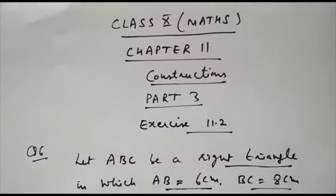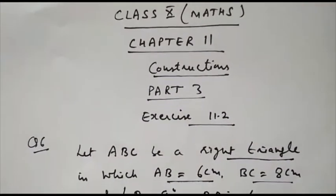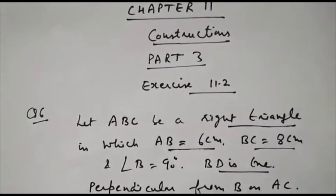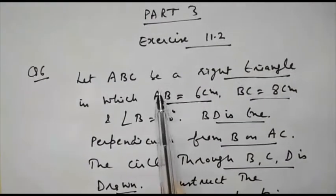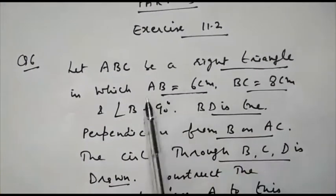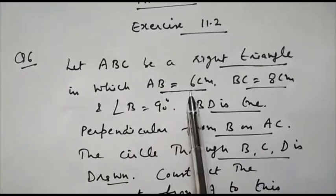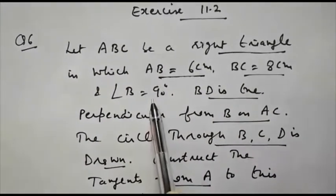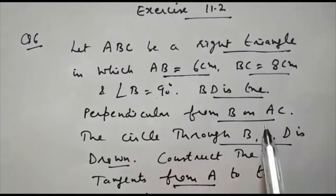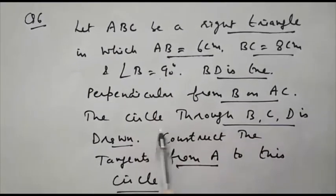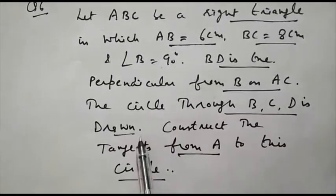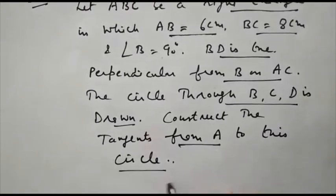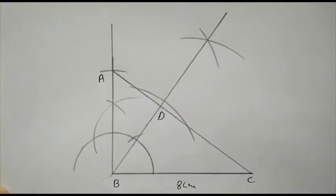Hello students, we continue with Chapter 11 Constructions Part 3, Exercise 11.2 Question Number 6. Let ABC be a right triangle in which AB equals 6 centimeters, BC equals 8 centimeters, and angle B is 90 degrees. BD is the perpendicular from B on AC. A circle through B, C, and D is drawn. Construct the tangent from A to this circle.